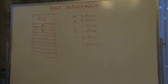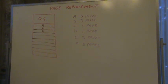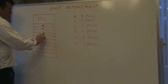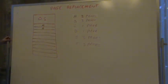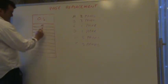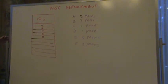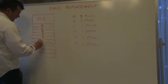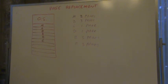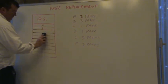Then B comes along. A is two frames. Then B comes along and B is three frames, so we could put B right in. Then C needs to come into memory — a little later on in time — and C is one frame, so C can go right there. Now process B finishes, so we can free up that storage. This is what our memory looks like.